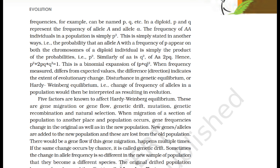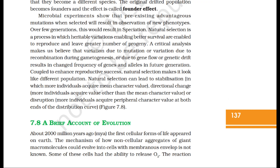Disturbance in genetic equilibrium, or Hardy-Weinberg equilibrium — that is, change in frequency of alleles in a population — would then be interpreted as resulting in evolution. Five factors are known to affect Hardy-Weinberg equilibrium: gene migration or gene flow, genetic drift, mutation, genetic recombination, and natural selection. When migration of a section of population to another place occurs, gene frequencies change in both the original and the new population. New genes or alleles are added to the new population and lost from the old population. There would be gene flow if this migration happens multiple times. If the same change occurs by chance, it is called genetic drift. Sometimes the change in allele frequency is so different in the new sample that they become a different species. The original drifted population becomes founders, and the effect is called the founder effect.